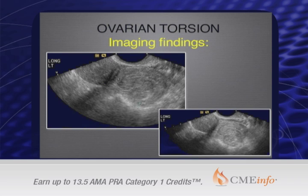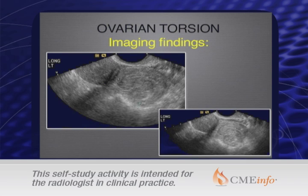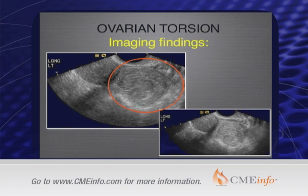This is the appearance of the target sign, the whirlpool sign, or torsion, where the adnexa — the fallopian tube and vessels — are twisted. When you see it, it's great. They also appear edematous, which is why we can see it so well. But again, it is not always easy to see, especially on ultrasound.